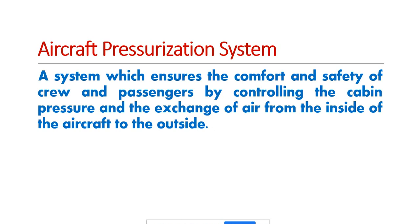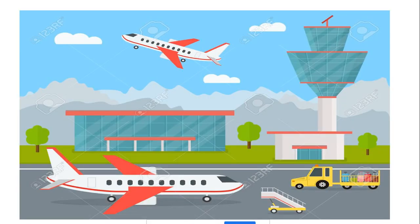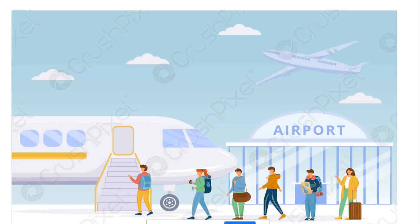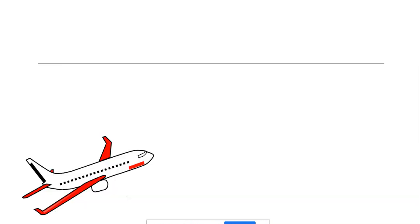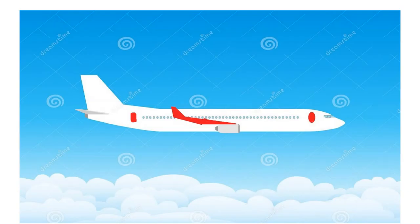Before getting into the topic, we will see a small animation for cabin pressurization showing what happens when the aircraft is flying. First the aircraft is at the airport for boarding passengers, then the passengers board, the aircraft takes off, and we have different phases of flight — engine start up, take off, and then cruise.